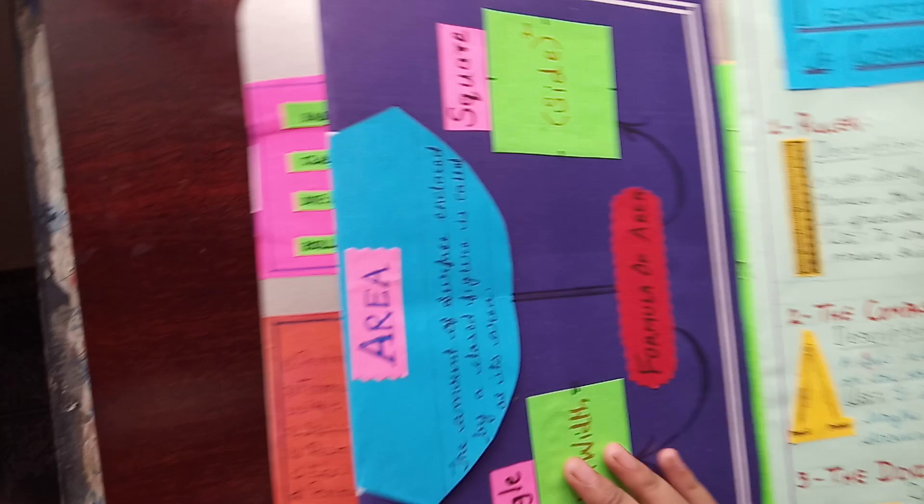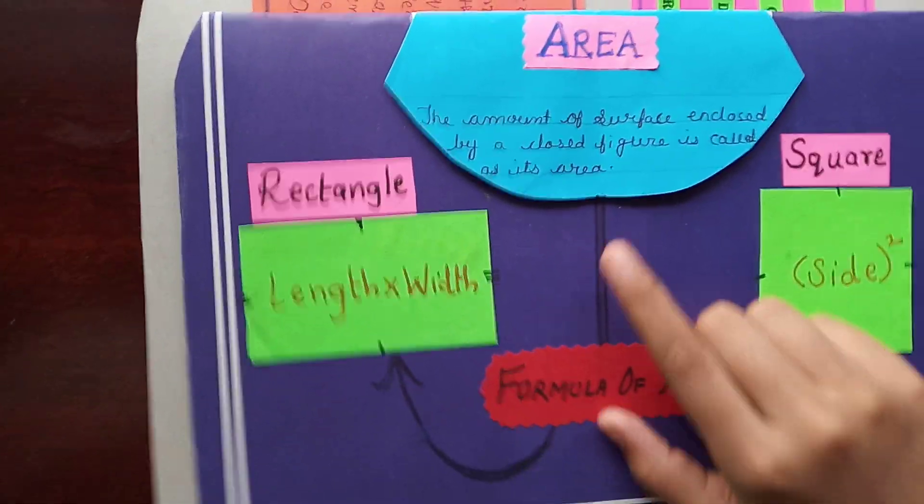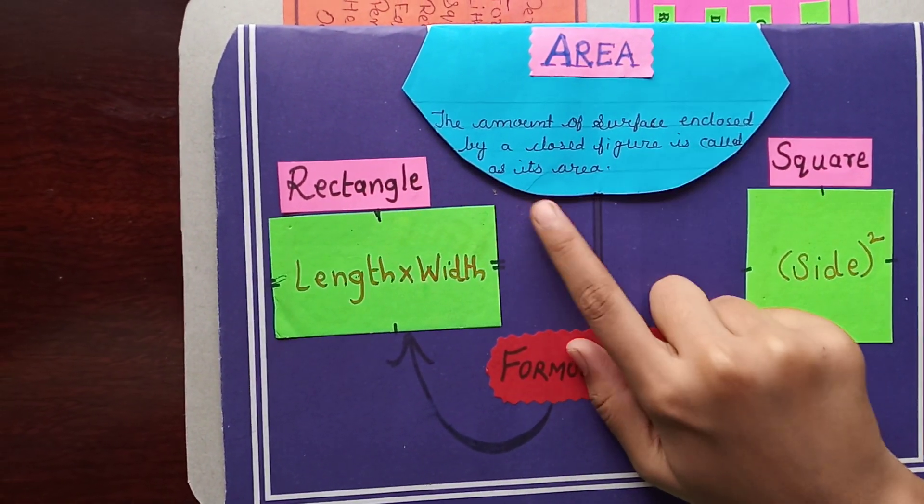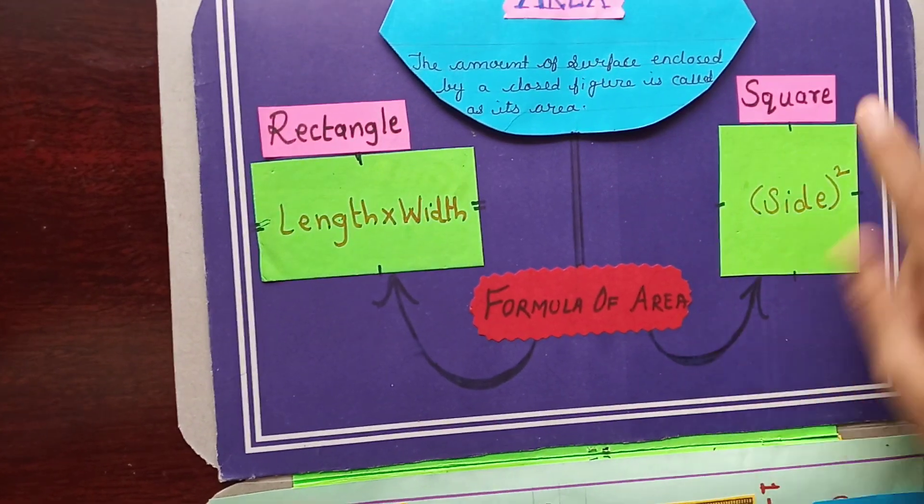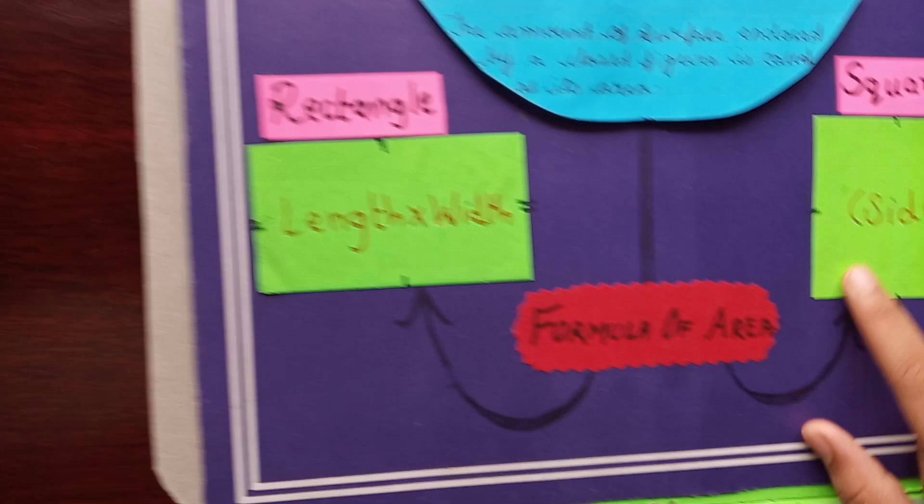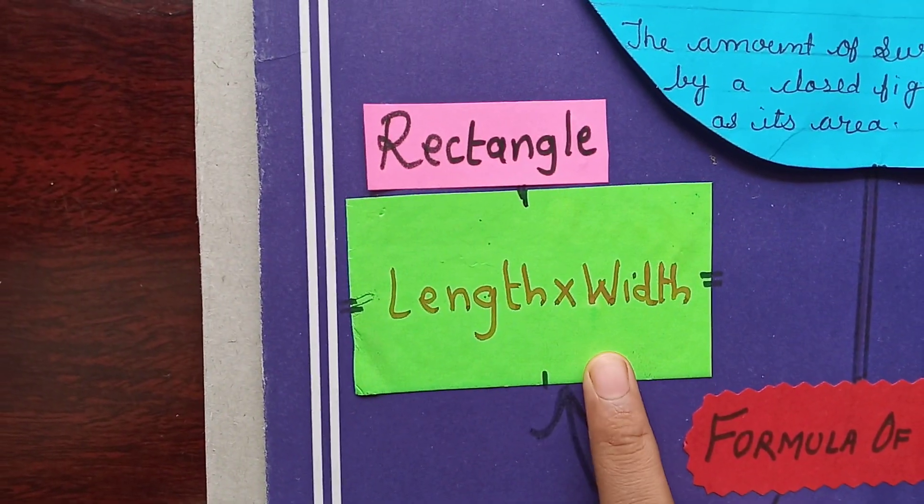And the next is area. Formula of area for the square is side square. Square formula is side square. And the formula of rectangle is length into width.